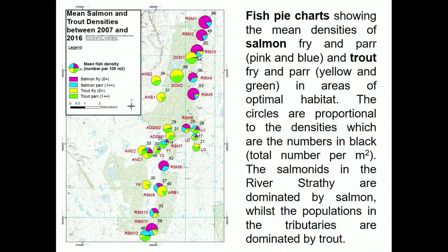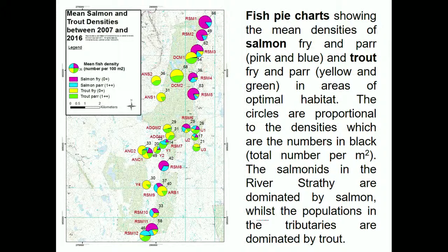The fish pie chart shows salmon parr densities — the diameter of the circle is proportional to density per 100 square meters. There were multiple electrofishing runs. Blue represents salmon parr, yellow is trout fry, and green is trout parr. These densities are considered good or excellent in the main stem, except in the middle reach, which is actually upstream of the wind farm area. We found no impact on biota from the wind farm, and no impact on pH from deforestation and wind farm construction.